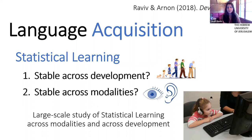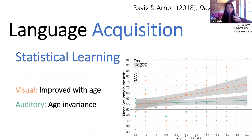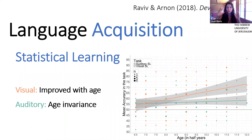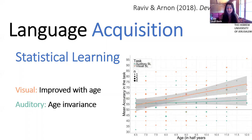I conducted a large-scale study of statistical learning across modalities and across development, testing 230 children between the ages of five to twelve on matching visual and auditory tasks. When we compared children's accuracy on both tasks, we found a difference in the developmental trajectory across modalities. Although learning improved with age in the visual modality, it was age-invariant in the auditory modality — auditory learning did not change much over childhood, while children got better at learning visual patterns as they grew older. These results show that statistical learning develops differently across domains and is not a unitary, stable capacity.